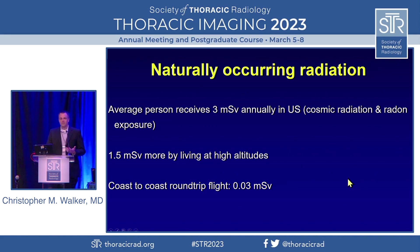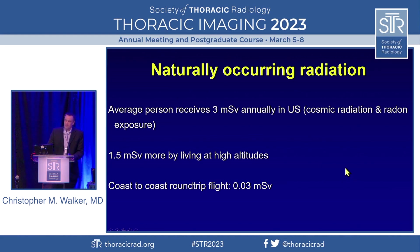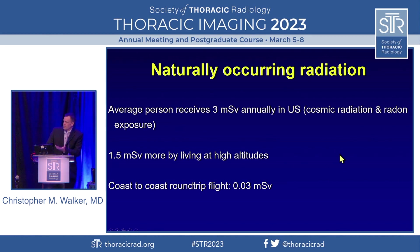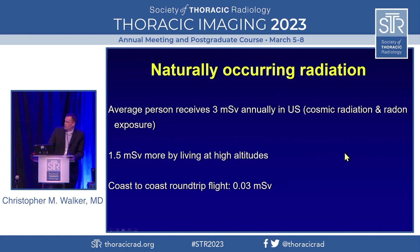Just living on planet Earth, we are all exposed to naturally occurring radiation. The average person in the United States receives about 3 millisieverts of non-medical radiation annually, coming from cosmic radiation from outer space as well as exposure to things in the atmosphere like radon. We also know that those living at higher altitudes are exposed to more radiation — people living in Denver will have more than someone living in Kansas City.